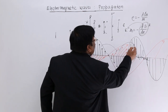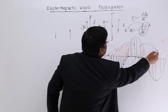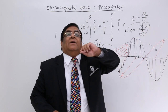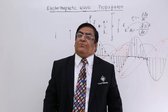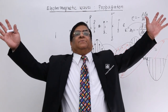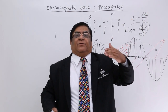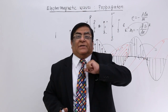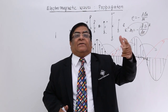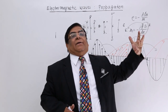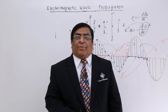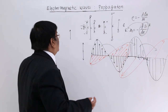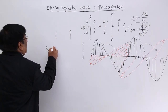The electric field creates the magnetic field, the magnetic field creates the next electric field, and they keep on going forever. From thousands of years in space, these electromagnetic waves are coming to us — the source is no more there, the sources finished millions of years back, yet we are receiving electric and magnetic fields. This is their propagation.